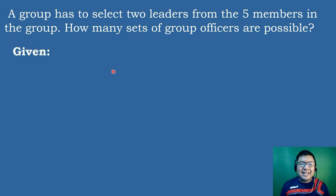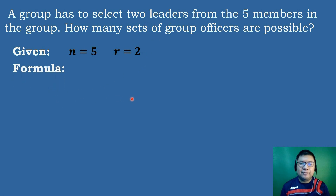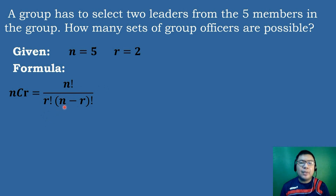Order does not matter. The value of N is equal to 5 and the value of R is equal to 2 because we select 2 leaders. We will use the formula of combinations: NCR equals N factorial over R factorial times the quantity N minus R factorial.